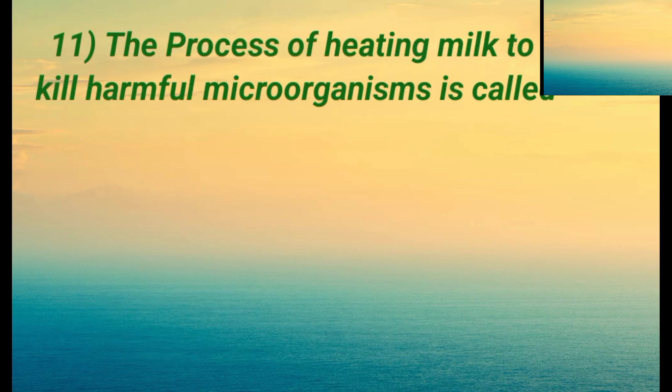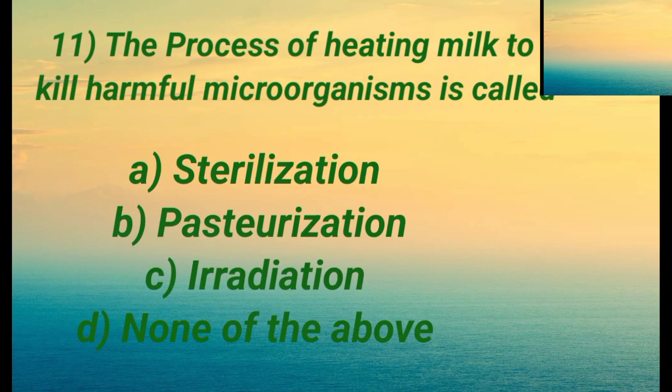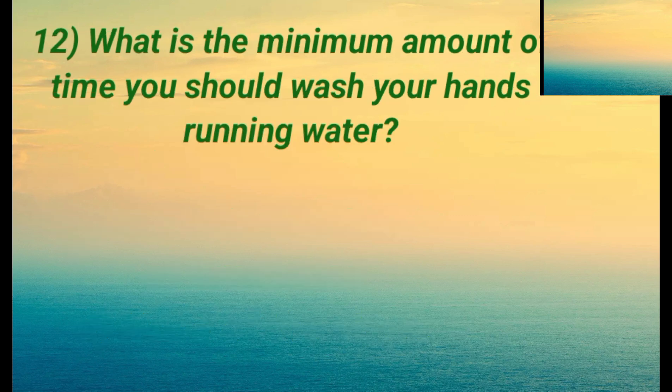Question eleven: the process of heating milk to kill harmful microorganisms is called — Option A is sterilization. Option B is pasteurization. Option C is irradiation. Option D is none of the above. The right answer is B: pasteurization.